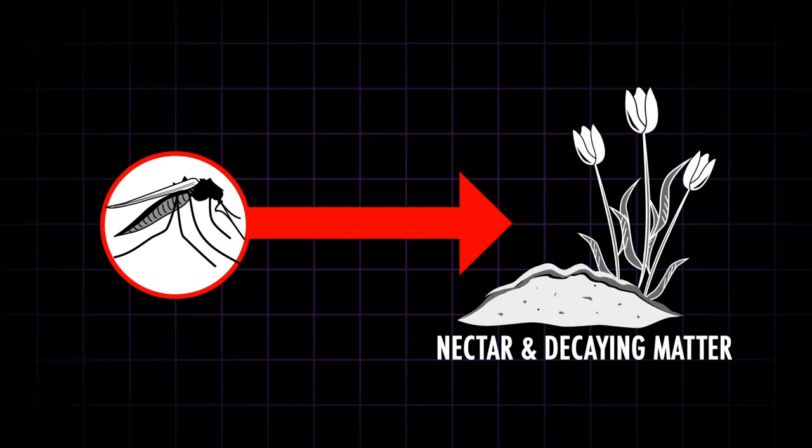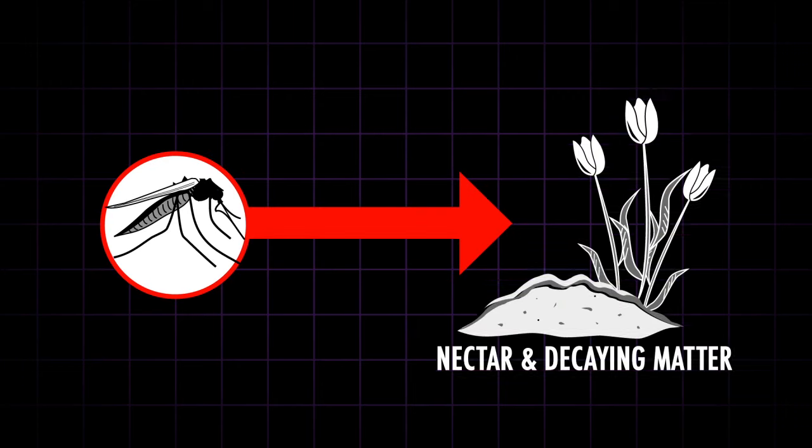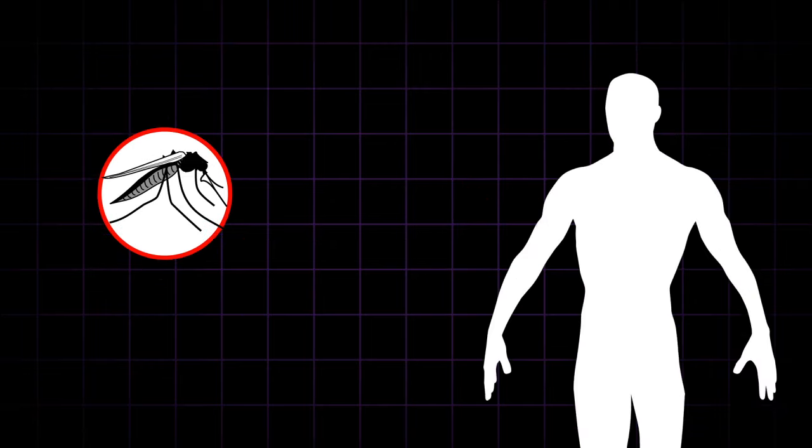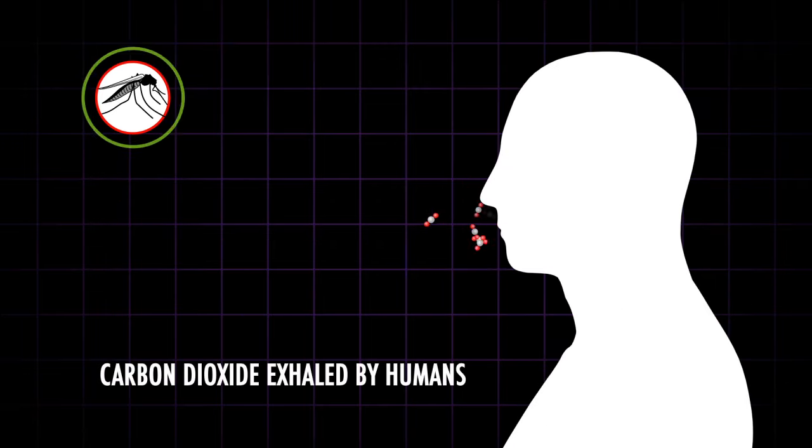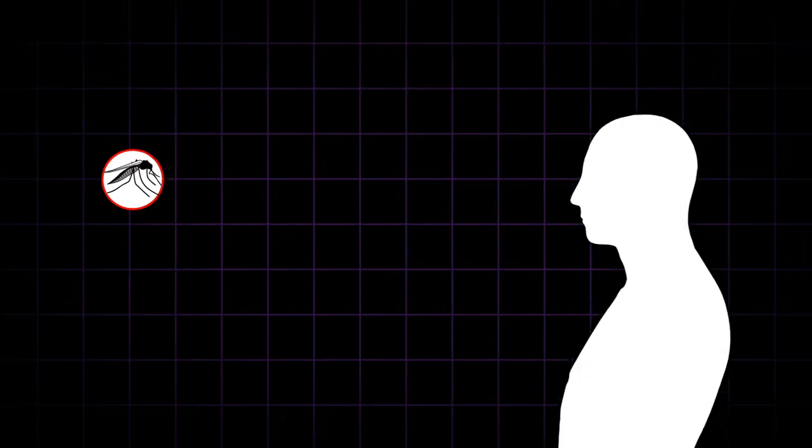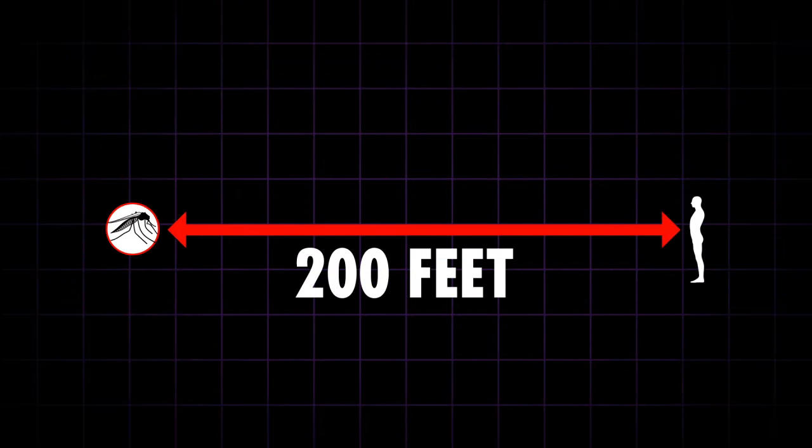All mosquitoes feed on nectar and decaying matter, but females also seek human blood, which is needed to reproduce. To locate their next meal, mosquitoes use their keen ability to detect carbon dioxide, the gas we exhale, and they can sense it from up to 200 feet.